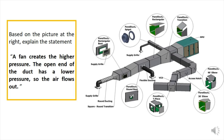Based on this picture, please explain the statement: a fan creates higher pressure, and the open end of the duct has a lower pressure, so the air flows out. You may explain based on the formula Q equals V times A, so the air flow equals the air velocity times the cross section of each duct. Relate that formula with this statement.